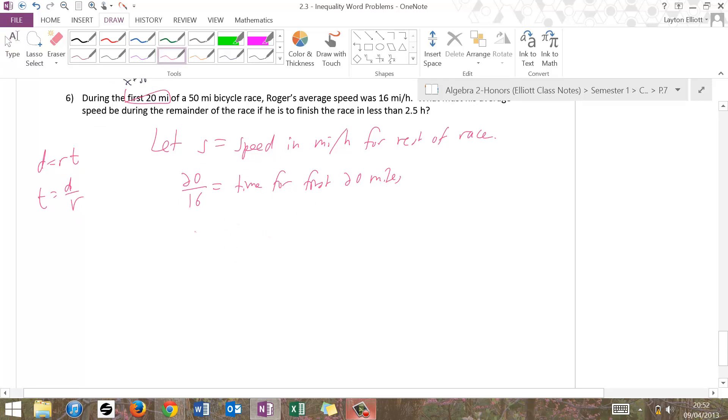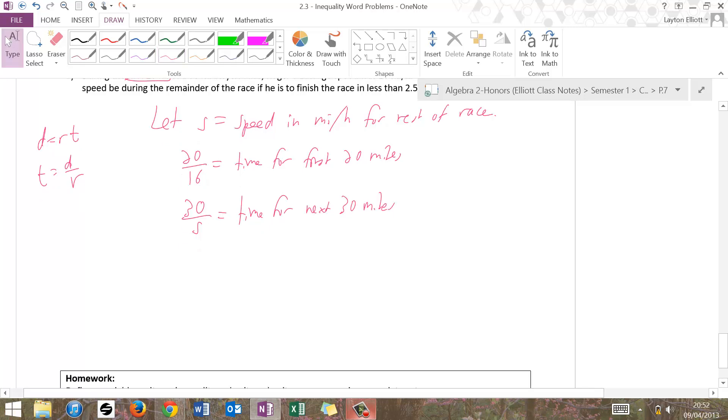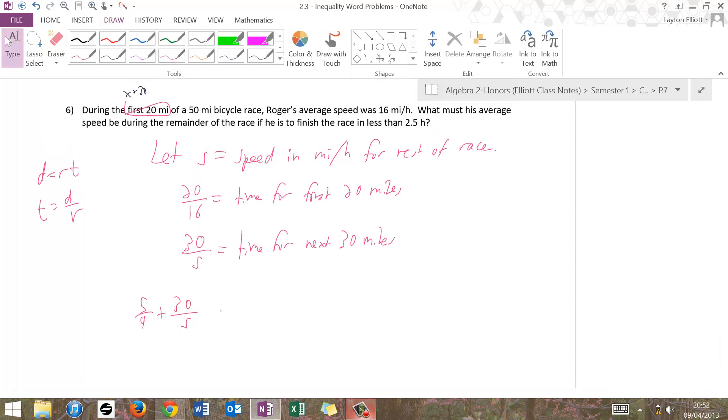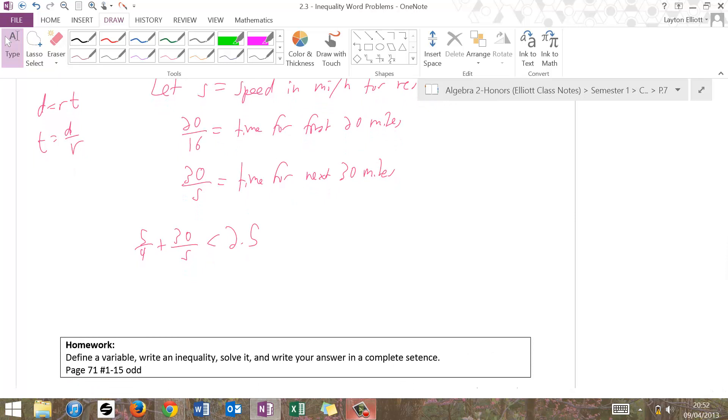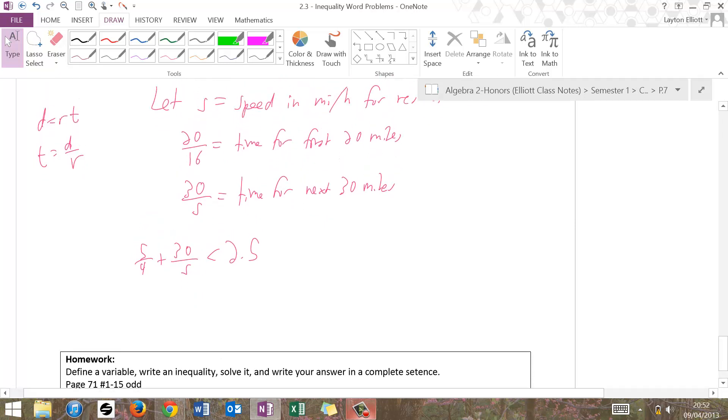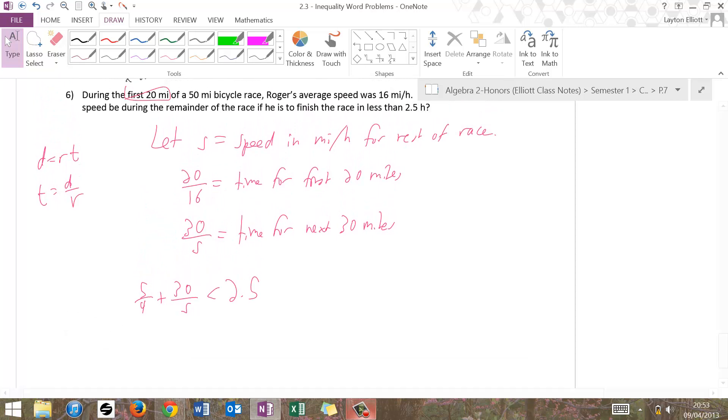Then we're going to match this and say, well, the distance of the remainder is 30, and his speed was unknown, s, and that is the time for the next 30 miles. Well, 20 over 16 reduces to 5 over 4, and we're going to add the time for remaining, and that's equal to the time to finish the race. That's the total time, and it says that it's less than 2.5 hours. As long as our units match, this would be the equation we need.